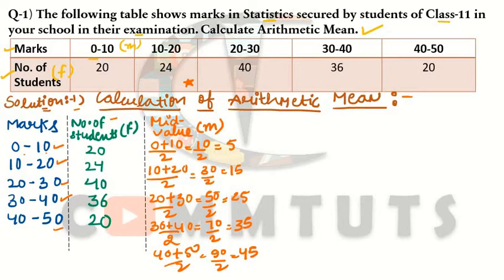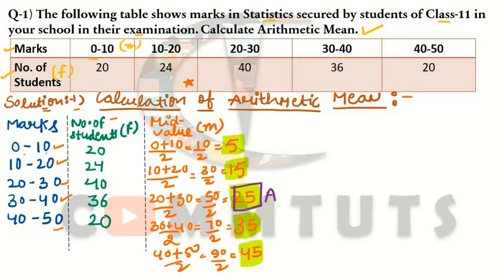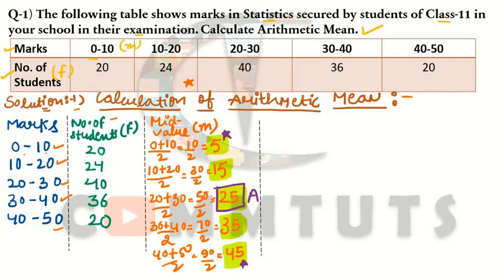Mid values are now calculated. Our next step is to find the assumed mean from these mid values. The assumed mean will be the middle value of the series. So our assumed mean A = 25. Now our next step is to calculate deviations. The formula is d = m − a, where m is the mid value and a is the assumed mean, which is 25 in this question.